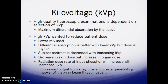There is maximum differential absorption by tissue. A high KVP is wanted to reduce patient dose — when KVP goes up, it drops the MA, and MA drives the dose. Differential absorption is better at lower KVP but dose is higher because it raises MA. Subject contrast decreases with increasing KVP. There is a decrease in skin dose but an increase in organ dose, because the energy is strong enough to penetrate the skin and deposit in the organs. Radiation dose rate at the input phosphor increases with increased KVP due to greater beam output and penetrability.